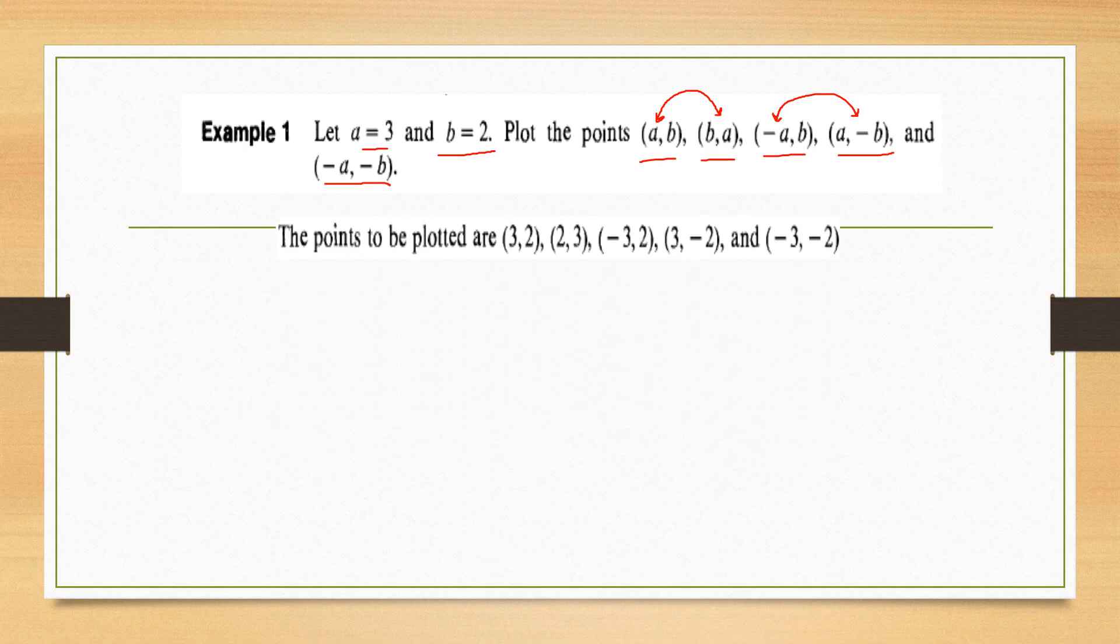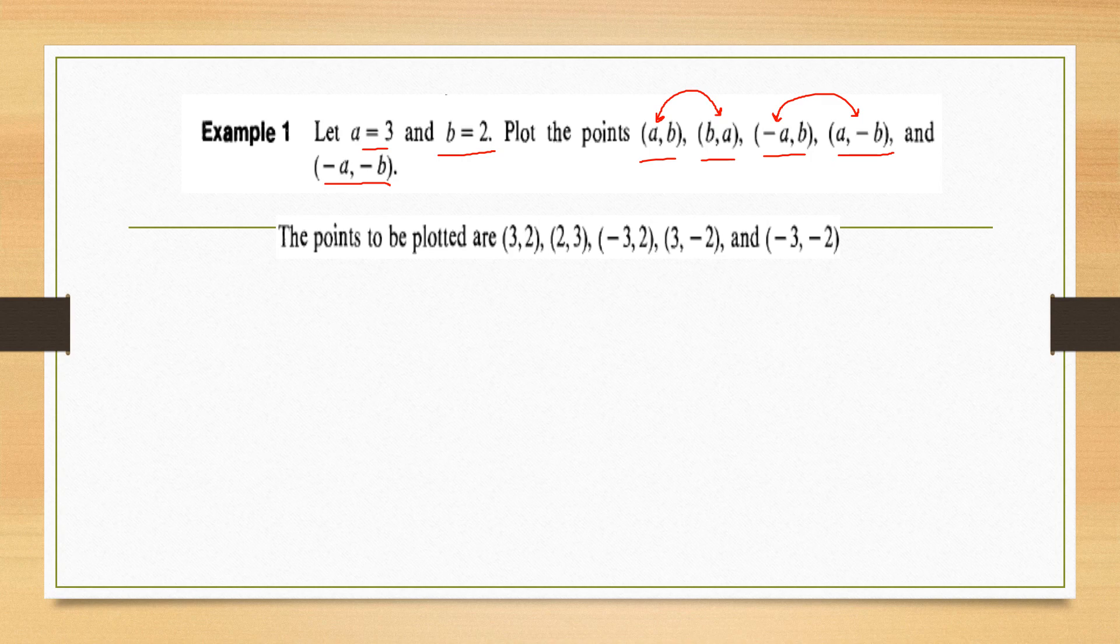First, we find the values of the points. A comma b will be three, two. B comma a will be two, three. And similarly, the other points are mentioned here. Now we will draw these points on the graph.